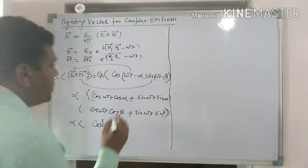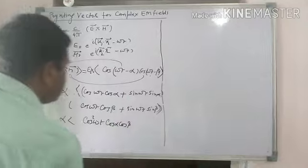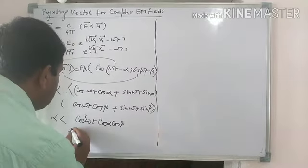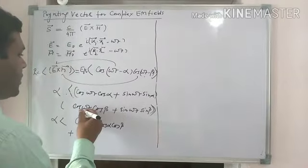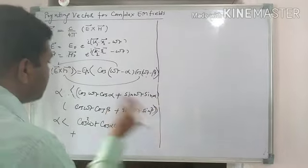So now we will multiply these terms and see what happens. So we will have cos²ωt, then cos α cos β. That's going to be the first term. Then we will have sin ωt cos ωt, and then sin α cos β cos α sin β.